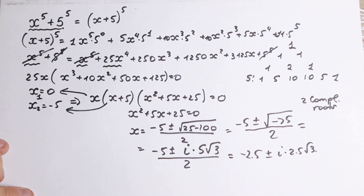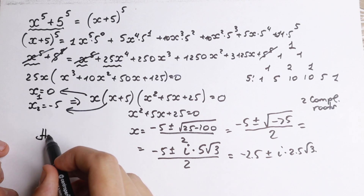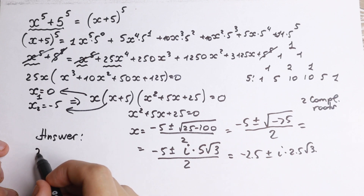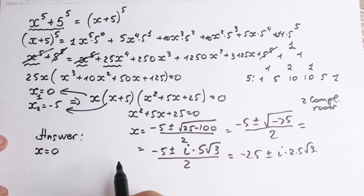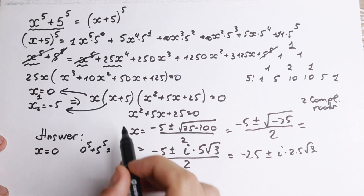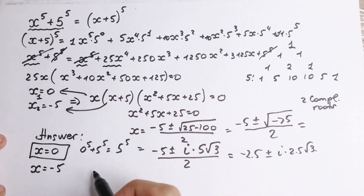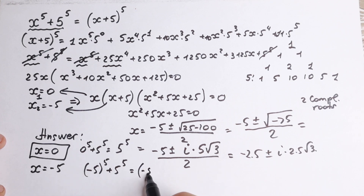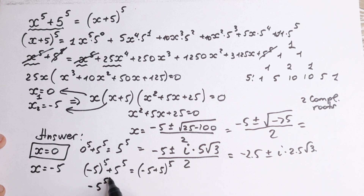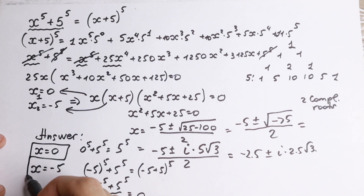So we have two complex roots from the quadratic. Let's write the final answer and verify the real roots. For x equals 0: 0 to the 5 plus 5 to the 5 equals 0 plus 5 to the 5, which checks out. For x equals minus 5: minus 5 to the fifth power plus 5 to the fifth power equals minus 5 plus 5 to the fifth power. Since the fifth power is odd, minus 5 to the fifth equals negative 5 to the fifth, so the left side gives 0, and the right side gives 0 to the fifth which is also 0. So this root is valid as well.